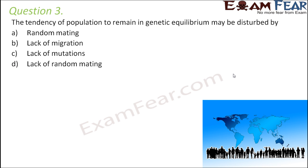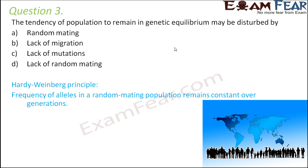Question number 3: The tendency of a population to remain in genetic equilibrium may be disturbed by: random mating, lack of migration, lack of mutations, or lack of random mating. This principle is the Hardy-Weinberg principle, which tells us that the frequency of alleles in a random mating population remains constant over generations. In a population where random mating is happening — that is, mating of individuals irrespective of genetic, physical, or social preference — the frequency of alleles is constant over generations, meaning genetic equilibrium exists.